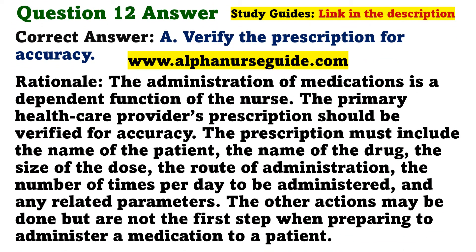The correct answer is A: verify the prescription for accuracy. Rationale: The administration of medications is a dependent function of the nurse. The primary health care provider's prescription should be verified for accuracy. The prescription must include the name of the patient, the name of the drug, the size of the dose, the route of administration, and the number of times per day to be administered.